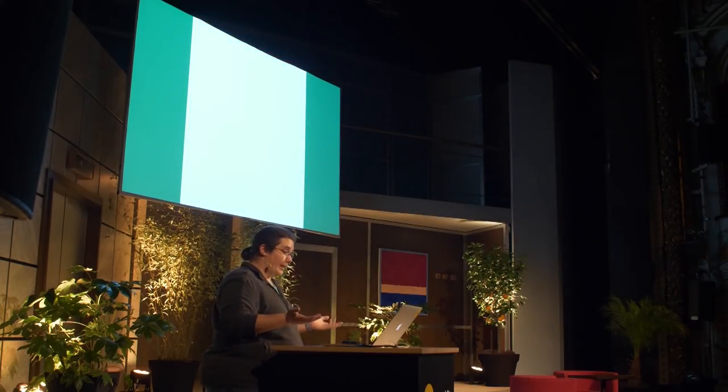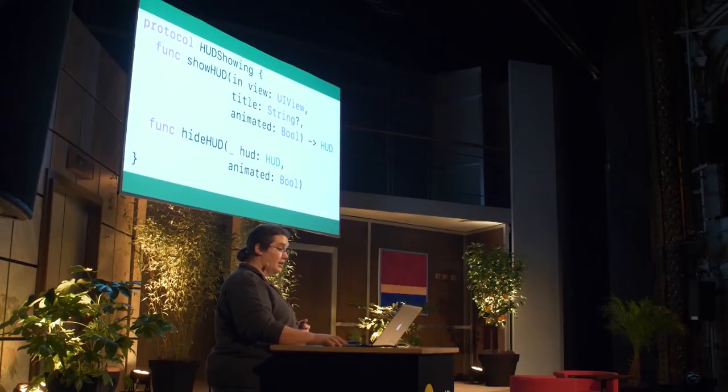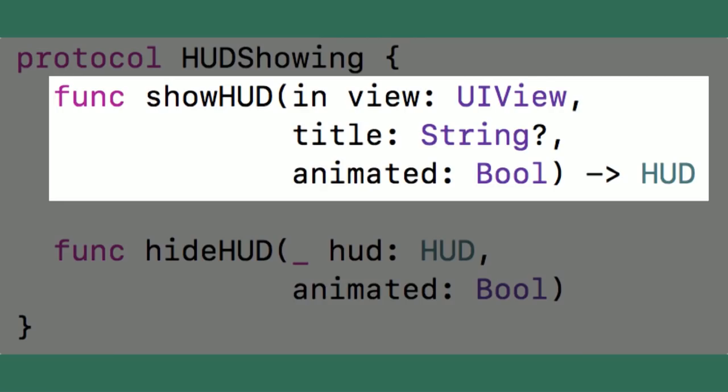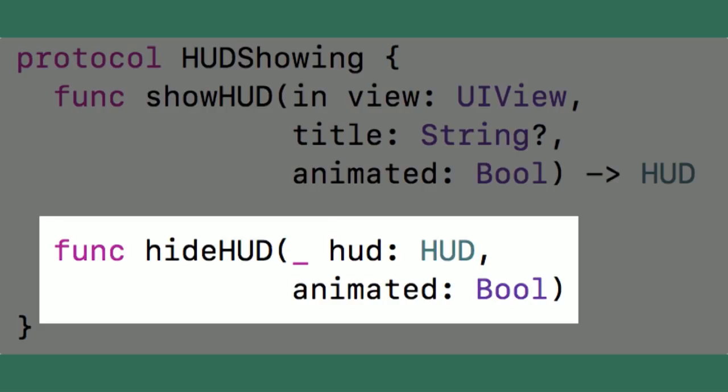This is also known as a HUD. It tells the user something is going on and they need to wait. There are two things this needs to do: show the HUD and hide the HUD. So I made a protocol with two functions. The first shows the HUD given some options like a title or whether the showing should be animated, and gives back whatever HUD was shown. The second method takes a HUD and hides it with the option to animate the hiding.